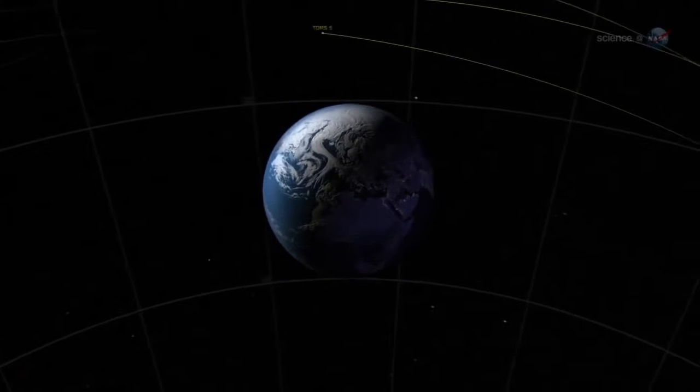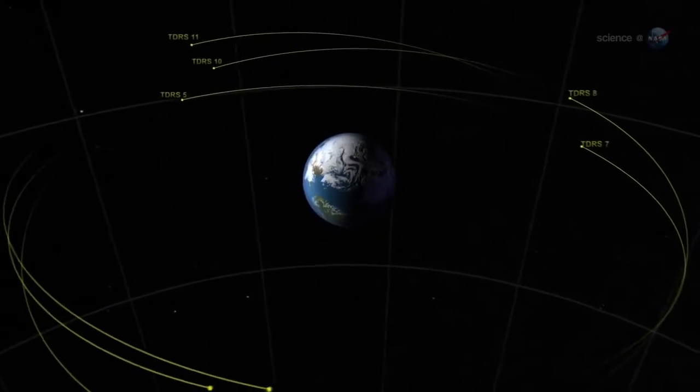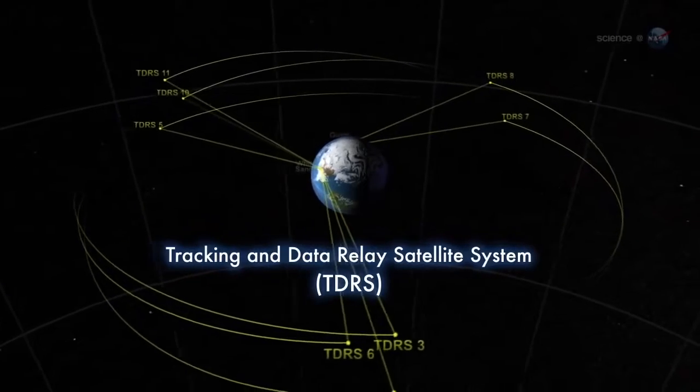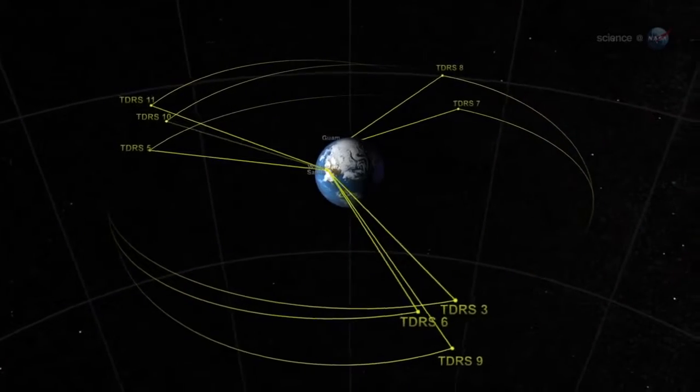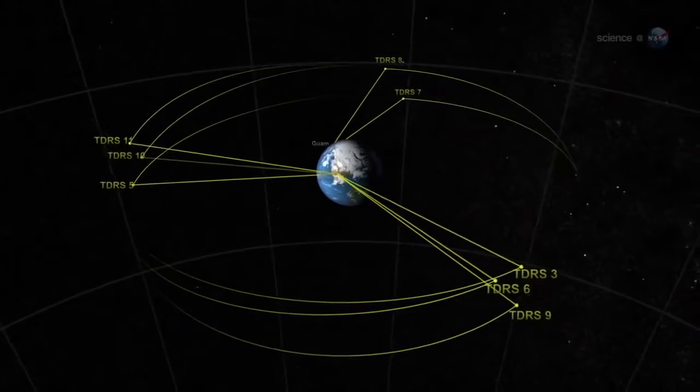Normal operations will begin about 60 days after launch. Data will be downlinked through NASA's Tracking and Data Relay Satellite System to NASA's Precipitation Processing Center in Greenbelt, Maryland, where it will be processed and distributed over the Internet.